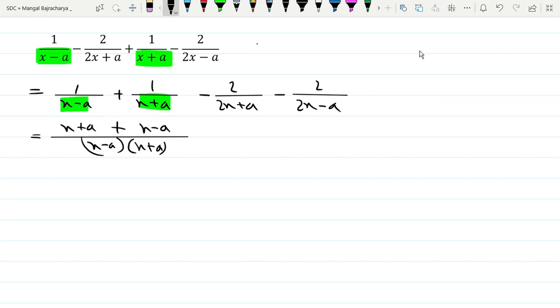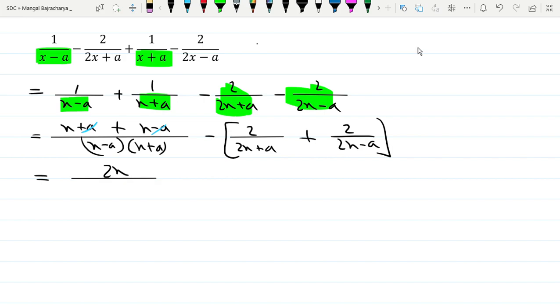Now the last term is minus, so we have minus common. 2x plus a, 2x plus a minus, 2x minus a. 1 times x plus a minus a, 1 times x plus a minus a, 2x plus a into x plus a into x minus a is x square minus a square.